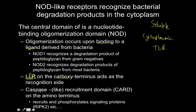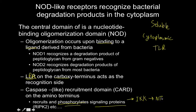At the N-terminus there's a caspase-like recruitment domain, otherwise known as CARD, which is going to recruit and phosphorylate signaling proteins. In this context it does the exact same thing: IKK gets activated, which acts to free up NF-κB, which is a transcription factor for cytokines and cell adhesion molecules.